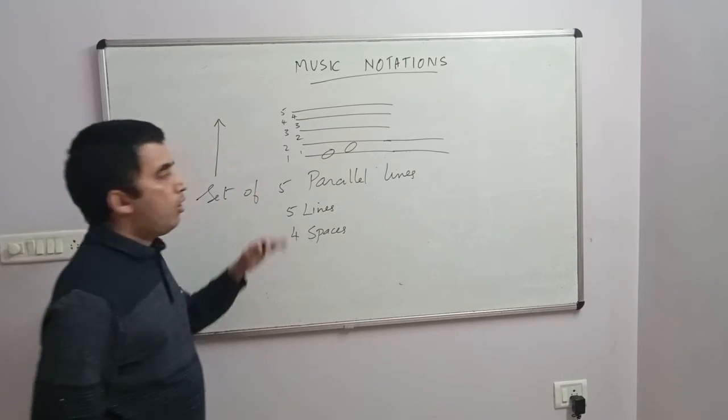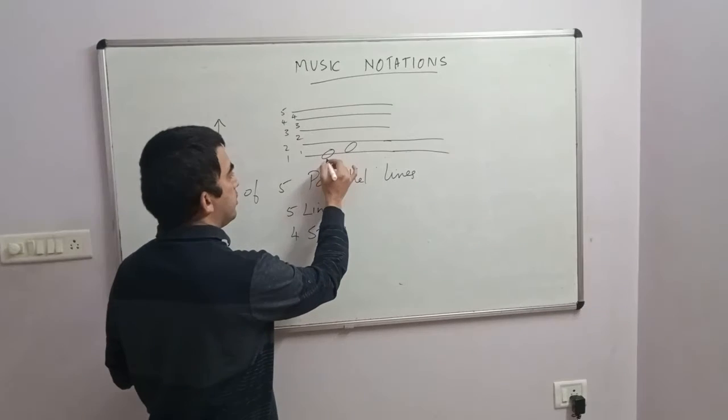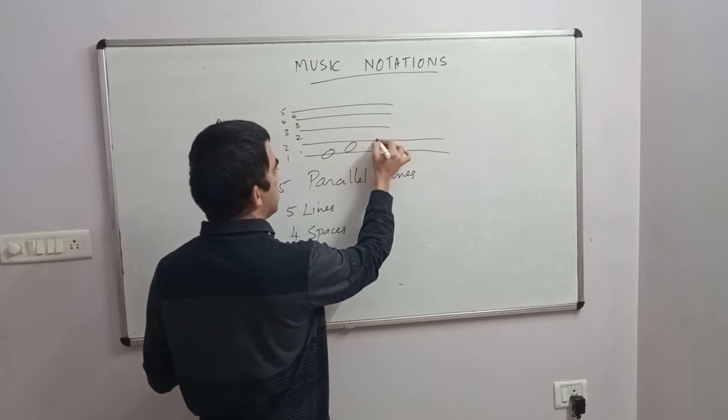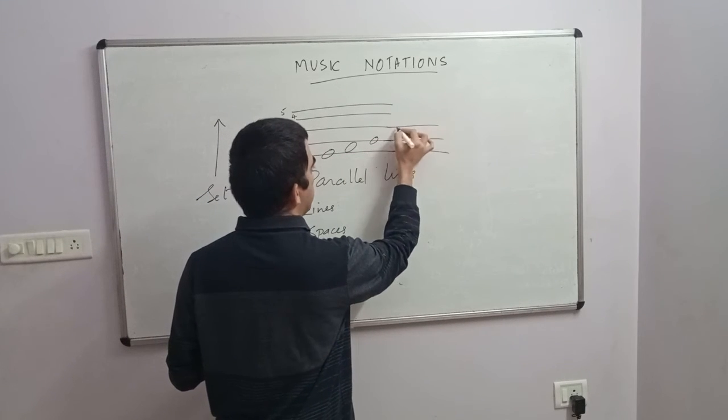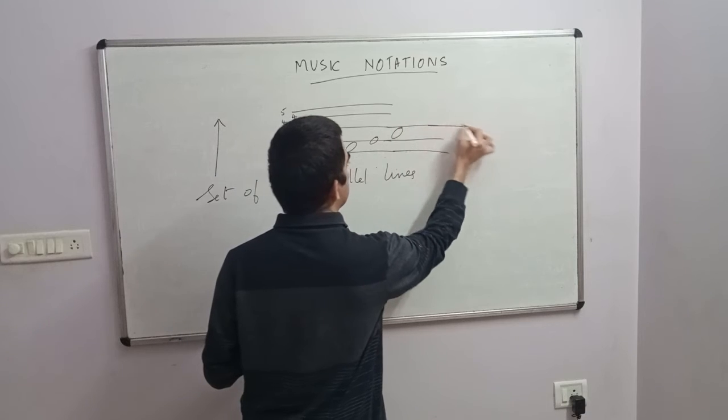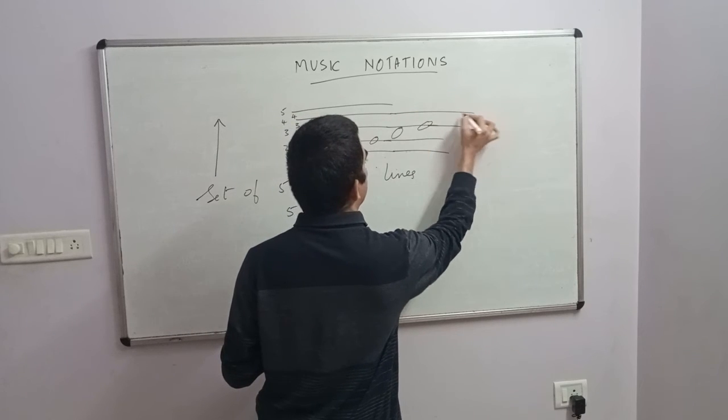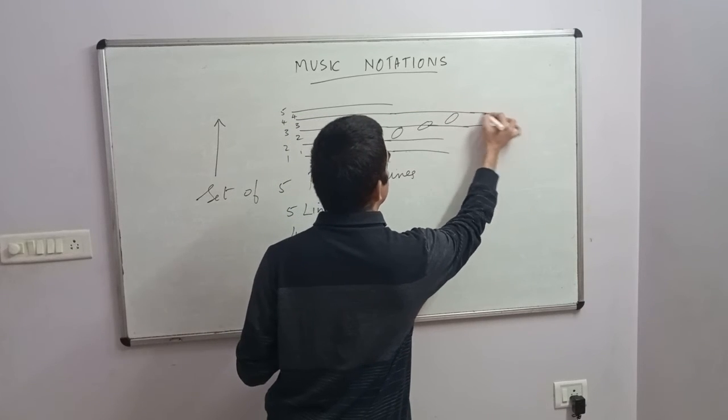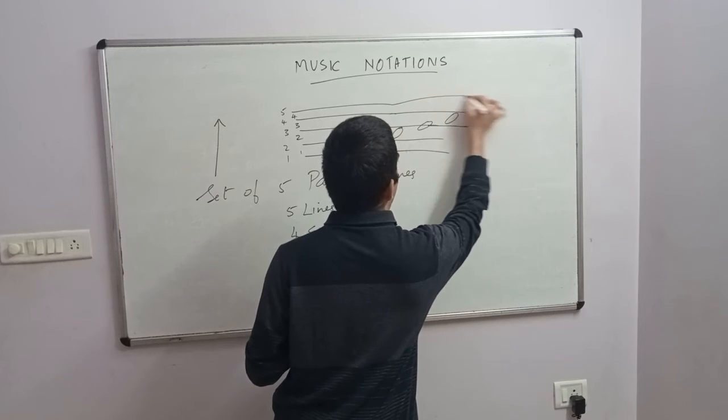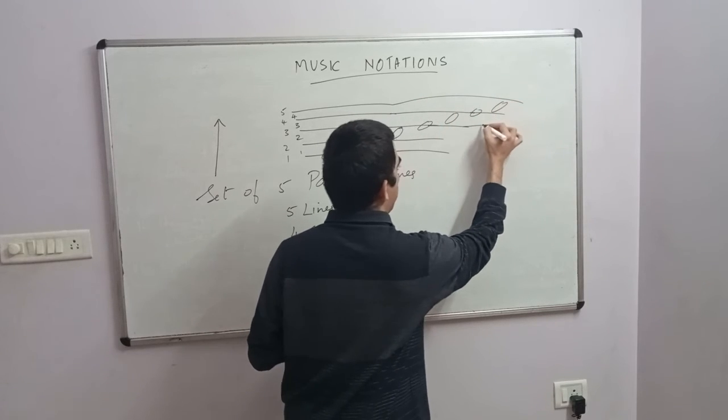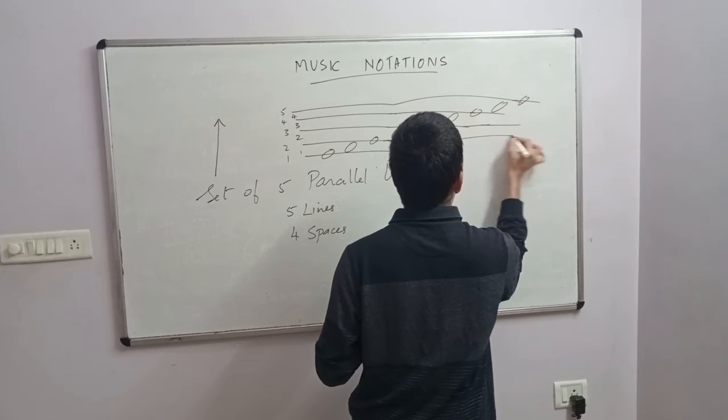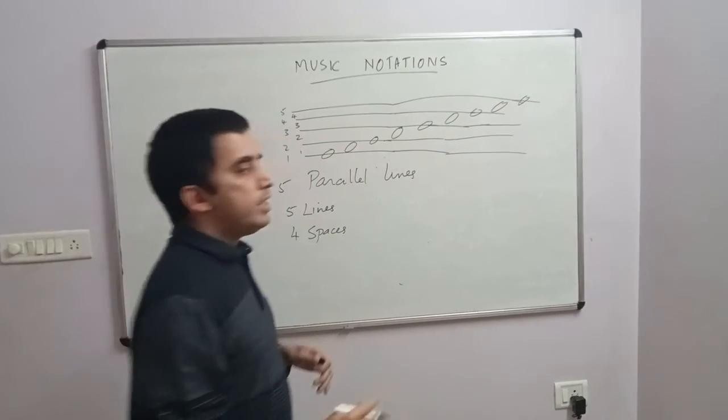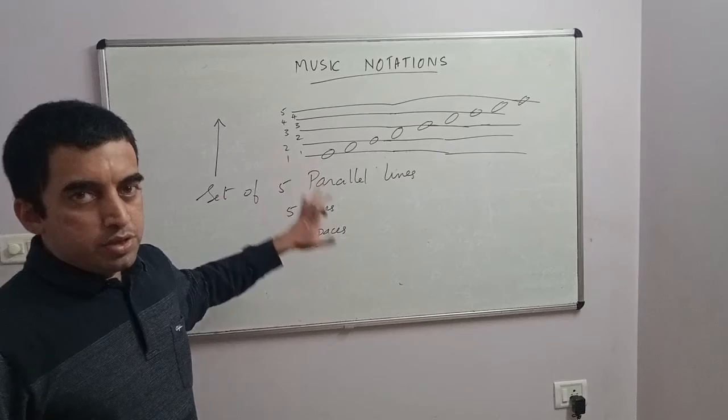And they will alternate with each other. So we will have the first line, first space, second line, second space, third line, third space, fourth line, fourth space, and the fifth line. This concept